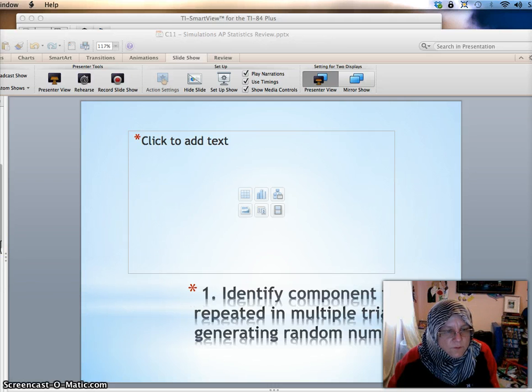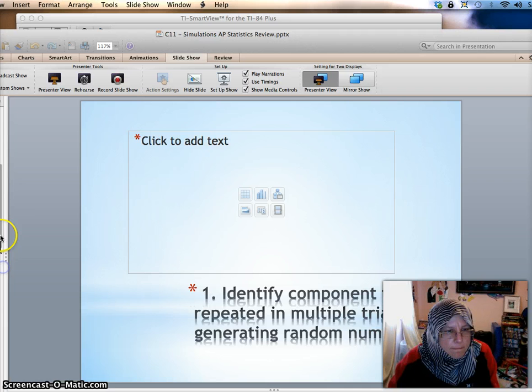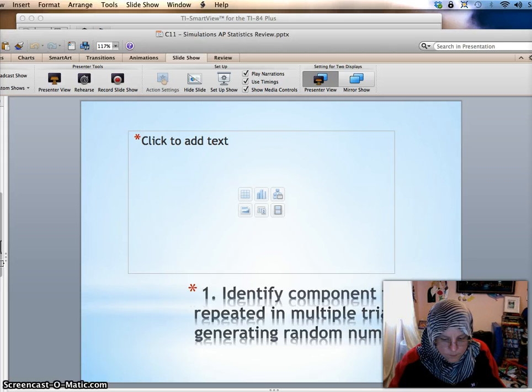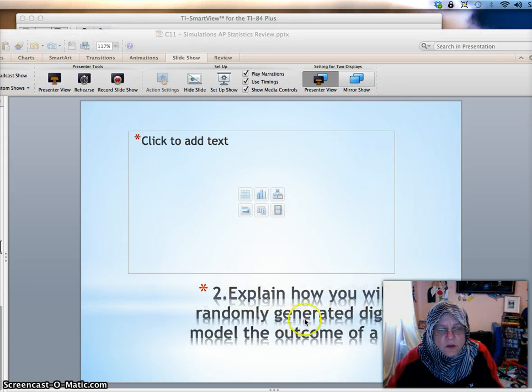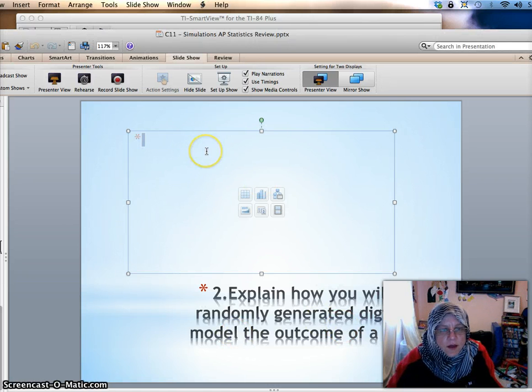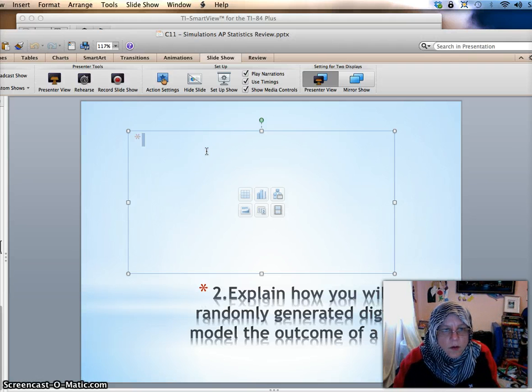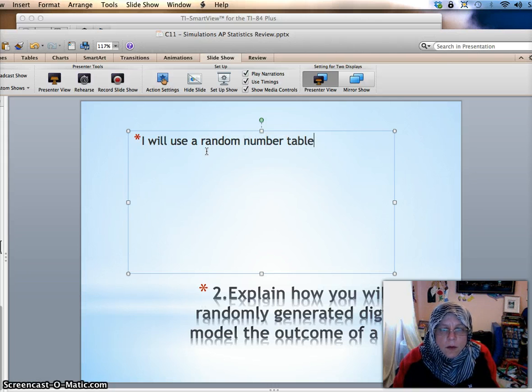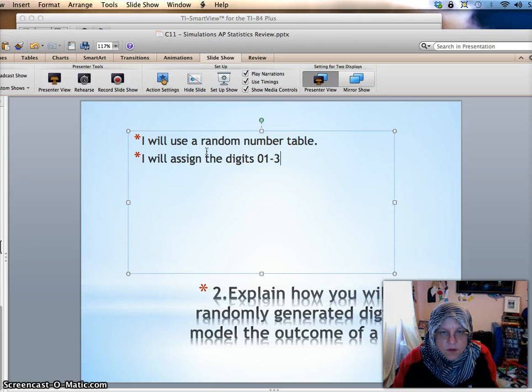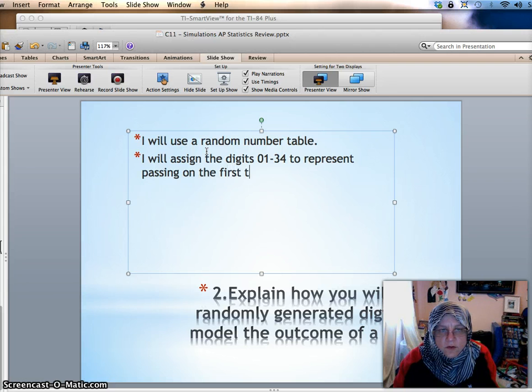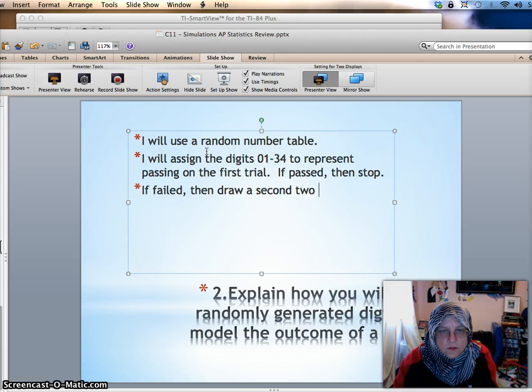And then the next thing that we would need to do is explain how we will use randomly generated digits to model the outcome of a trial. So for that, I might say something like, I will use a random number table. And I will assign the digits 01 through 34 to represent passing on the first trial. So if passed, then stop. If failed, then draw a second two-digit number.